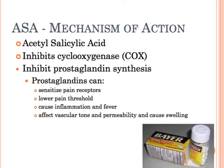Let's talk about aspirin, acetylsalicylic acid. It is a cyclooxygenase inhibitor, and as we've said before, it inhibits prostaglandin synthesis. Prostaglandins basically sensitize yourself to pain — they cause inflammation and fever, and also cause permeability which causes vascular swelling.